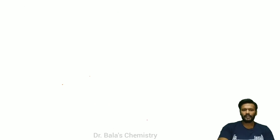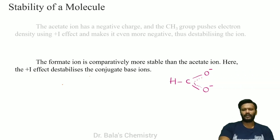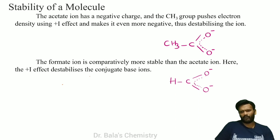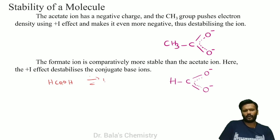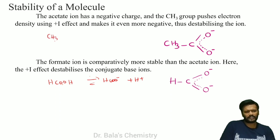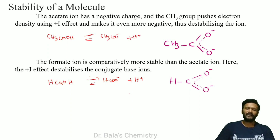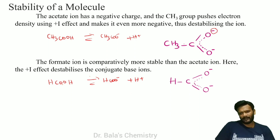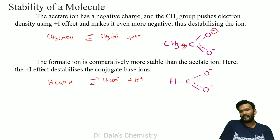Now let's look at stability. HCOOH (formic acid) dissociates to HCOO⁻ + H⁺. CH3COOH (acetic acid) dissociates to CH3COO⁻ + H⁺. Now, the acetic acid already has a negative charge on the conjugate base. The methyl group is an electron donating group, so if you push electrons, the electron density is even higher on the negative charge.